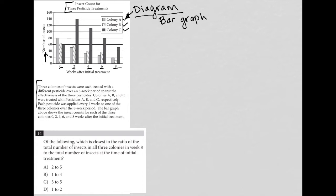So the information provided to us here says three colonies of insects were each treated with a different pesticide over an eight-week period to test the effectiveness of the three pesticides. Colonies A, B, and C were treated with pesticides A, B, and C, respectively. Each pesticide was applied every two weeks to one of the three colonies over the eight-week period. The bar graph above shows the insect counts for each of the three colonies, zero, two, four, six, and eight weeks after the initial treatment.